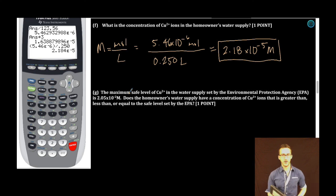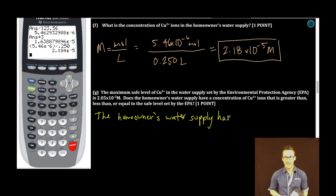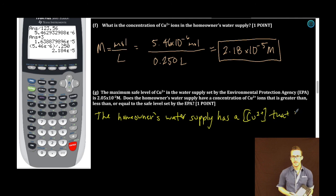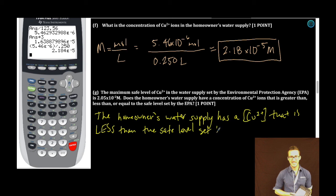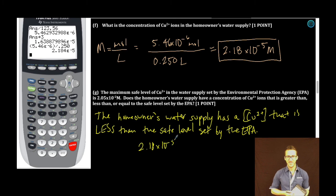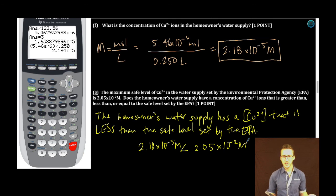That brings us down to the final part of this free response question. The maximum safe level of copper two plus in the water supply set by the Environmental Protection Agency, also known as the EPA, is 2.05 times 10 to the minus two molar. Does the homeowner's water supply have a concentration of copper two plus ions that is greater than, less than, or equal to the safe level set by the EPA? The homeowner's water supply has a concentration of copper two plus ions that is less than the safe level set by the EPA. How do I know that? 2.18 times 10 to the minus five is less than 2.05 times 10 to the minus two. This is one of those questions where it's easy to make a mistake. Scientific notation, those negative numbers can be kind of tricky. 10 to the negative five is smaller than 10 to the negative two. And we are done.